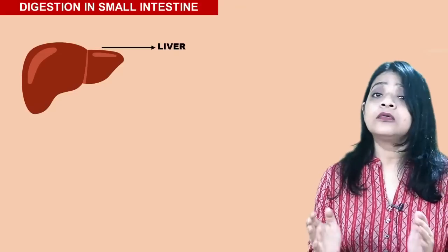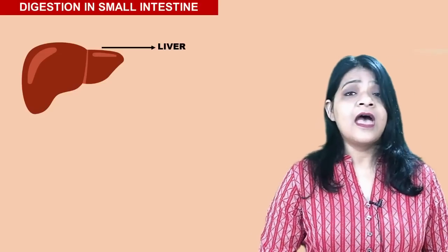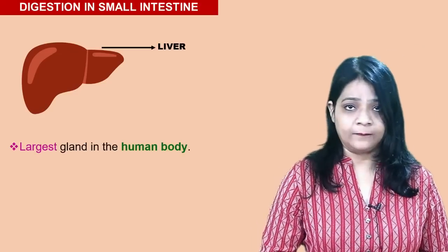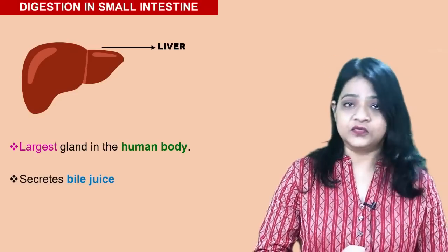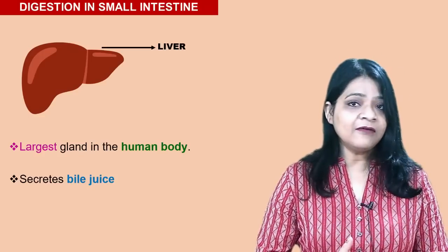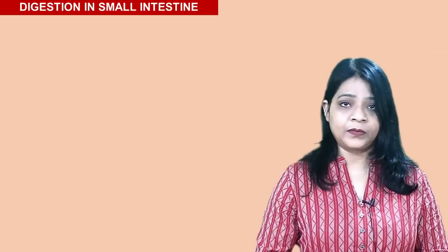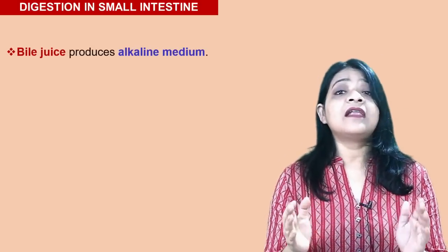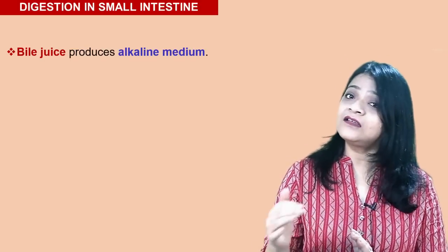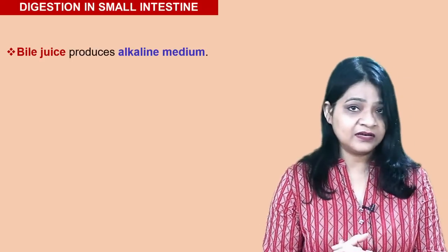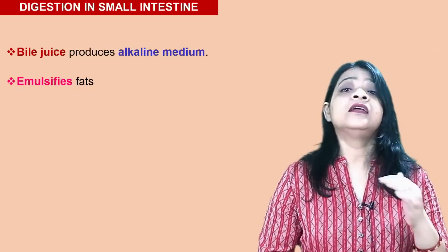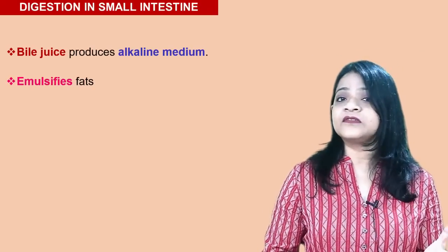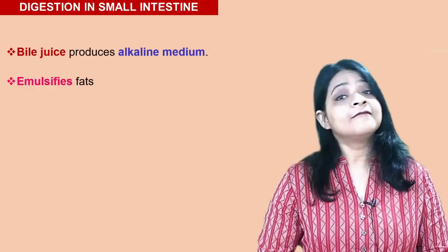The liver is considered the largest gland in the human body. The liver secretes a very important juice called bile juice. Bile juice is secreted by the liver and stored in the gallbladder. The function of bile juice is to create an alkaline medium — it neutralizes the acidic medium that has been created in the stomach — and it also emulsifies fat, meaning it breaks fat into simpler molecules called fatty acids.